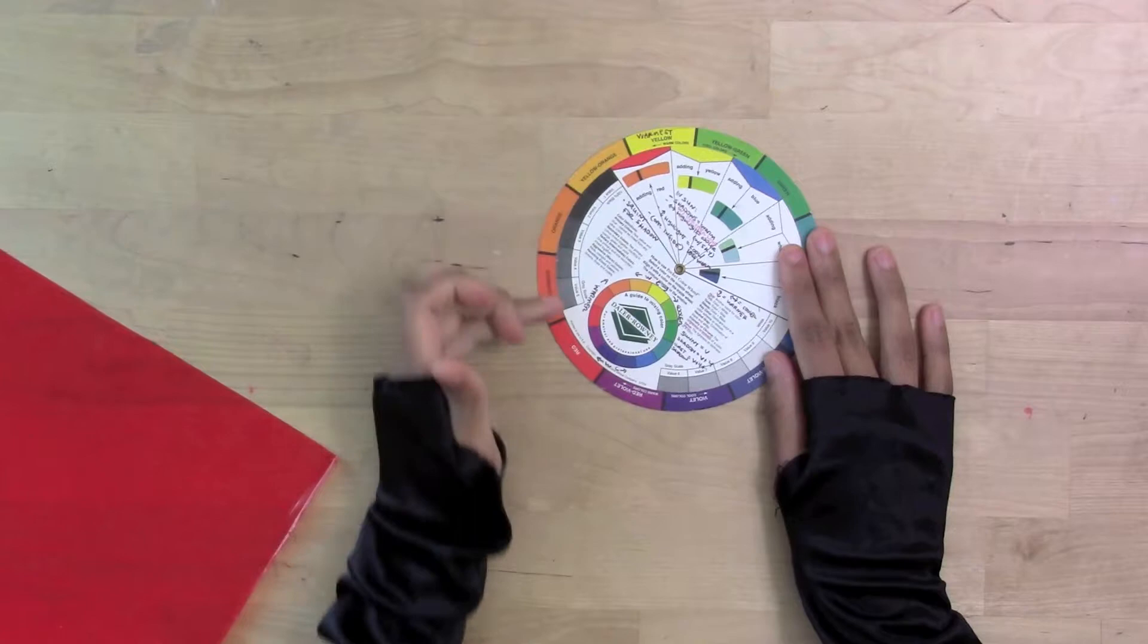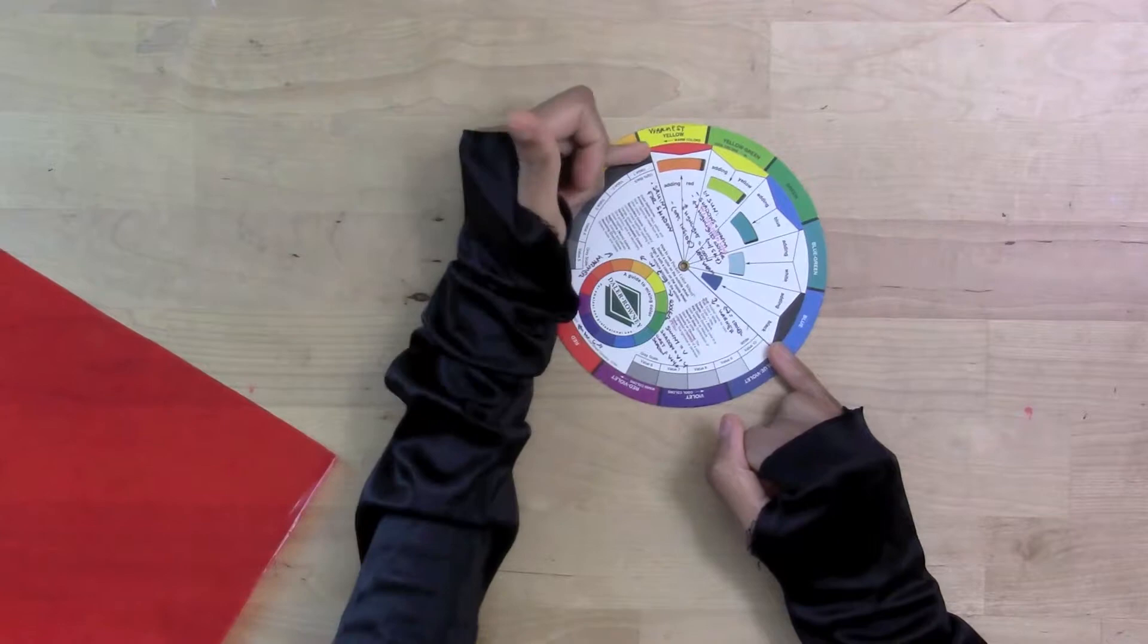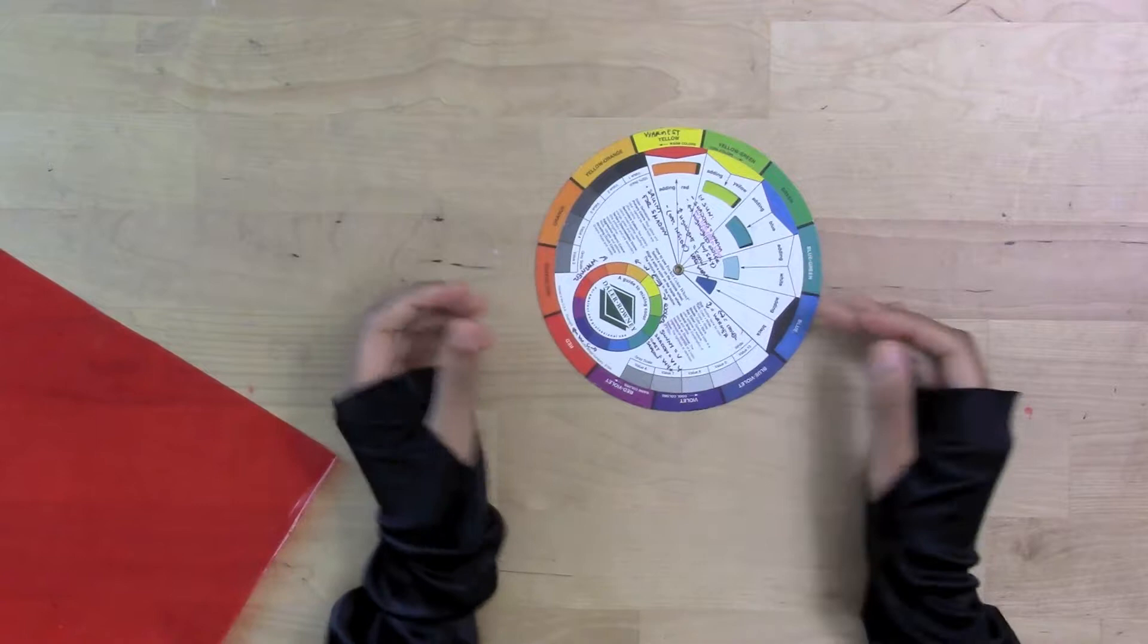Values, which is just your darks and lights, so without color, just your scale from light all the way to dark, how important that is in a painting. So it's just as important as color in making your painting successful.